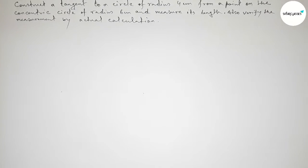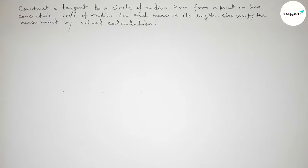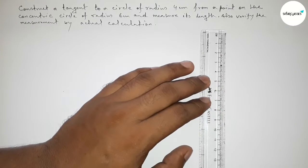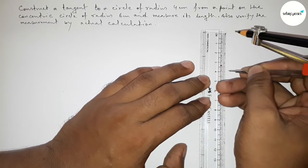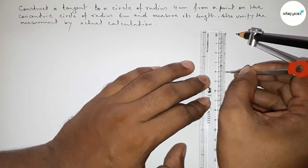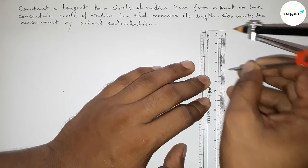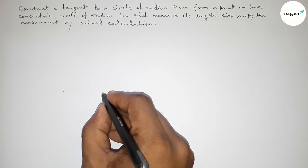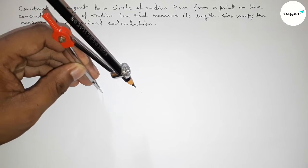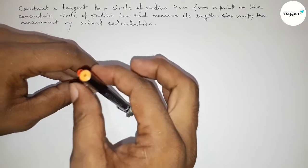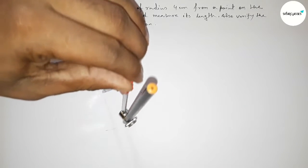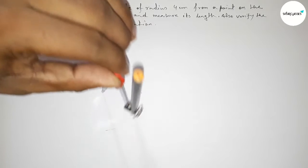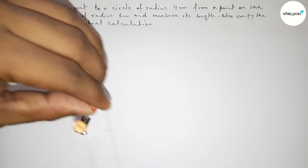Let's start the video. First, we have to draw a circle of radius 4 centimeters. Taking 4 centimeters length using the compass, we take a center point, put the compass on that point, and draw a circle of radius 4 centimeters.